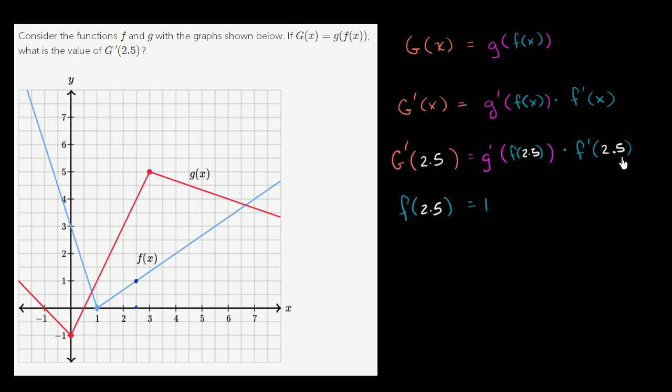And we also need to figure out what f prime of 2.5 is. f prime of 2.5 is just essentially the slope of the tangent line at the function when x equals 2.5. So it's really just the slope right over here. And at least over this part of the function where it's actually a line, the slope is actually very easy to spot out.